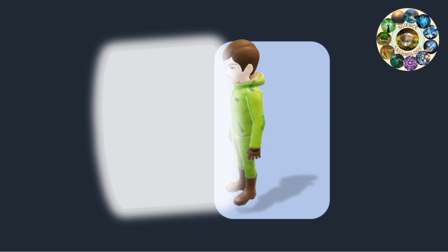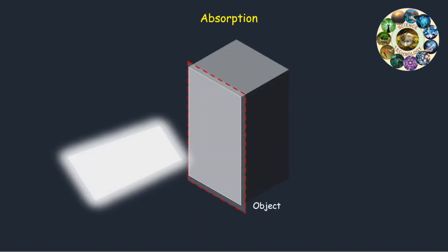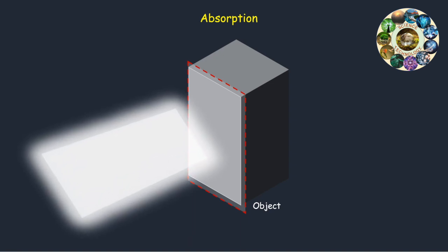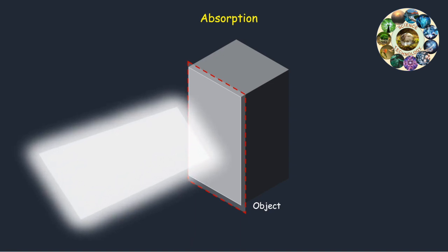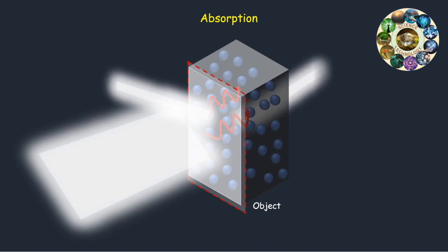Absorption is when light is completely taken in by an object and doesn't pass through or bounce off. This is the process that occurs in opaque objects. The absorption of light generally takes place at the interface or boundary of two different materials. When light radiations fall on the surface of an object, a portion of the energy contained by the light waves passes on to the particles of the substance, increasing the internal energy of those particles. Some portion may reflect or transmit.